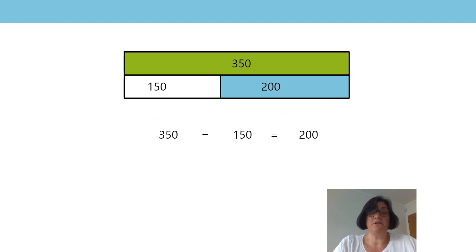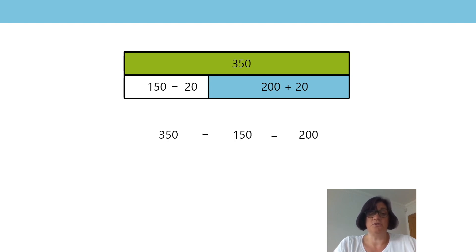We could look at it on a bar model as well. You can see that I've got a white bar representing the subtrahend — his savings of £150 — but his savings decrease by 20. So the blue bar representing the amount he has left to save must increase by 20. I could also choose to represent this as jottings: subtracting from the subtrahend, adding the same amount to the difference.